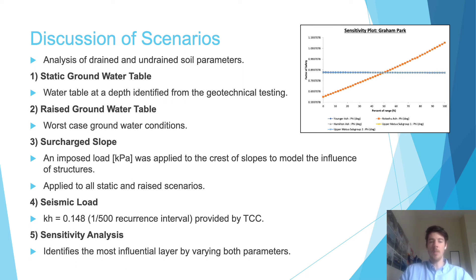Fourthly, a seismic case was carried out using a KH of 0.148 for a 1-in-500 year recurrence interval. This value has been provided by the Tauranga City Council specific to the Te Papa Peninsula. Lastly, a sensitivity analysis was carried out, which identifies the most influential layer by varying both geotechnical parameters. An example of this can be found in the top right figure.